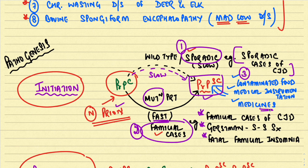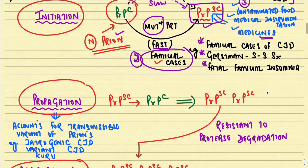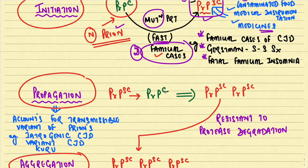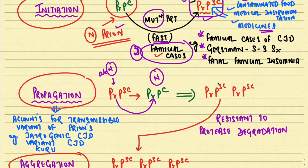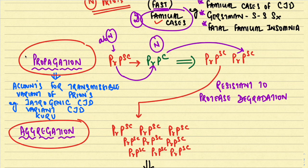Once the abnormal prion protein is formed, it shows propagation — a phenomenon wherein the abnormal PrPSc can convert normal PrPC into abnormal form as well. This propagation accounts for the transmissible variants of prion disease, including iatrogenic CJD, variant CJD, and kuru.